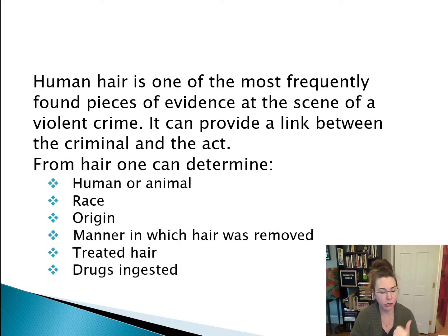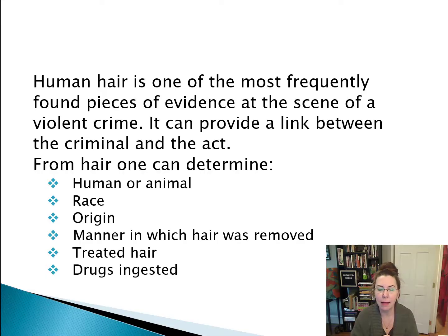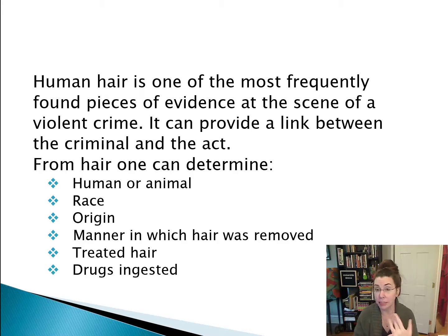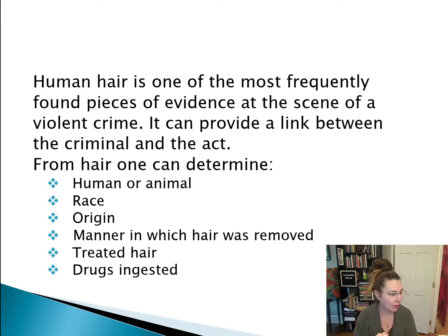From hair, one can determine if it's human or animal, the race of the individual it came from, its origin, the manner in which the hair was removed — meaning was it torn, was it cut, was it burned — if the hair has been treated or processed in any way, and if that person potentially has either taken drugs or been poisoned over a long period of time. That can also be discovered by examining the hair chemically.